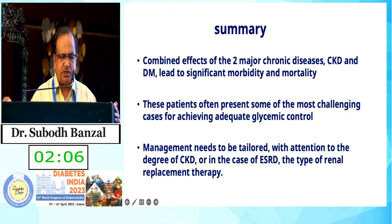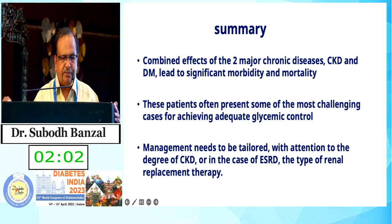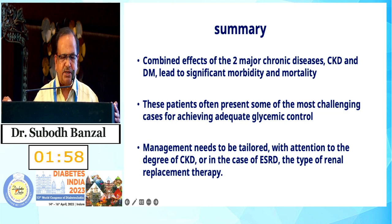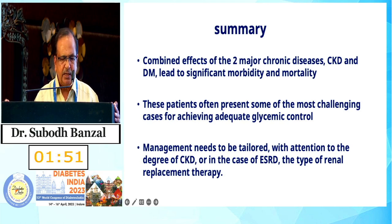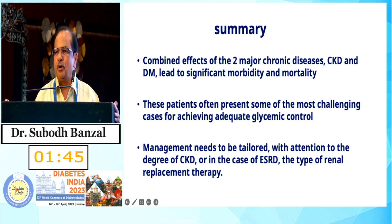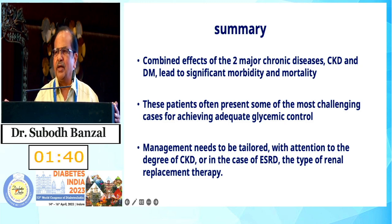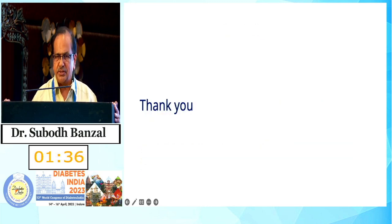In summary: the combination of CKD and diabetes leads to increased morbidity and mortality and presents the most challenging cases for achieving adequate glycemic control. Management must be tailored to the degree of CKD and ESRD, and the type of renal replacement therapy — whether hemodialysis or peritoneal dialysis — to avoid hypoglycemia. Thank you very much for your attention.